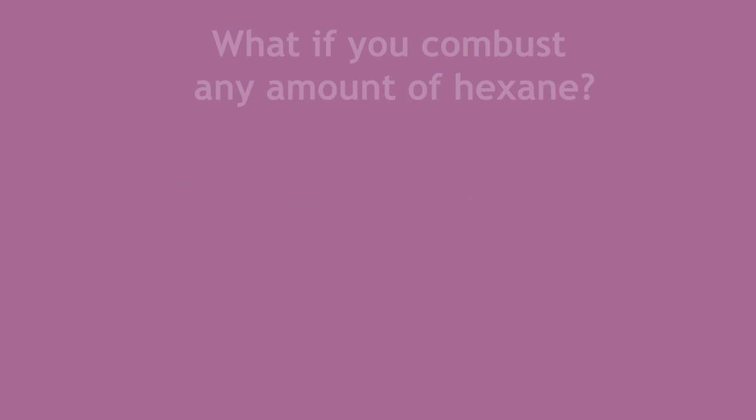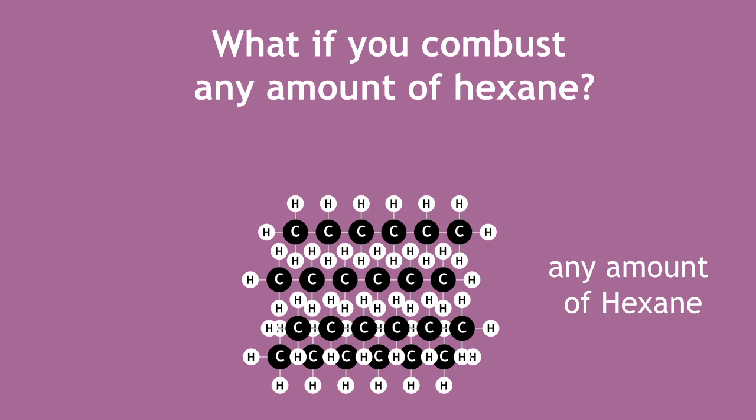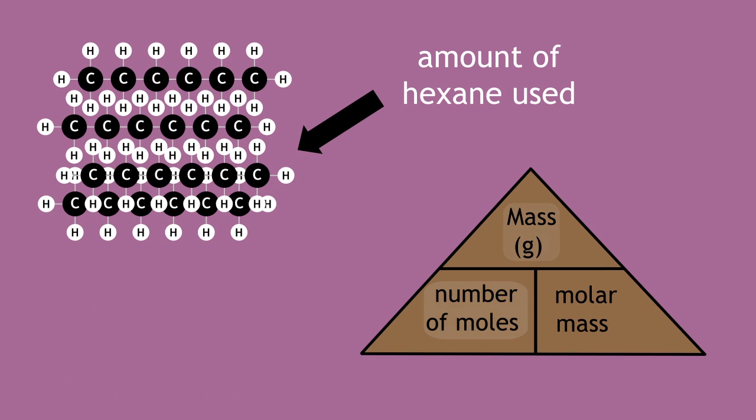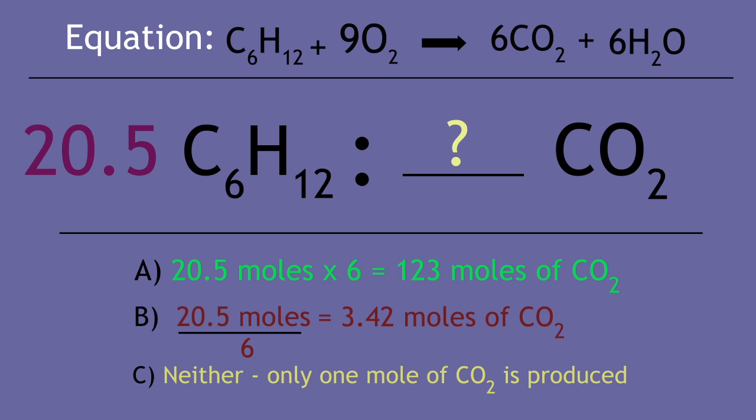However, what if you combust any amount of hexane? The amount of hexane used in mass and moles will vary according to how long the car is used. Let's say that you use the car for 20 minutes and it combusts 20.5 moles of hexane. How many moles of carbon dioxide do you think will be produced?